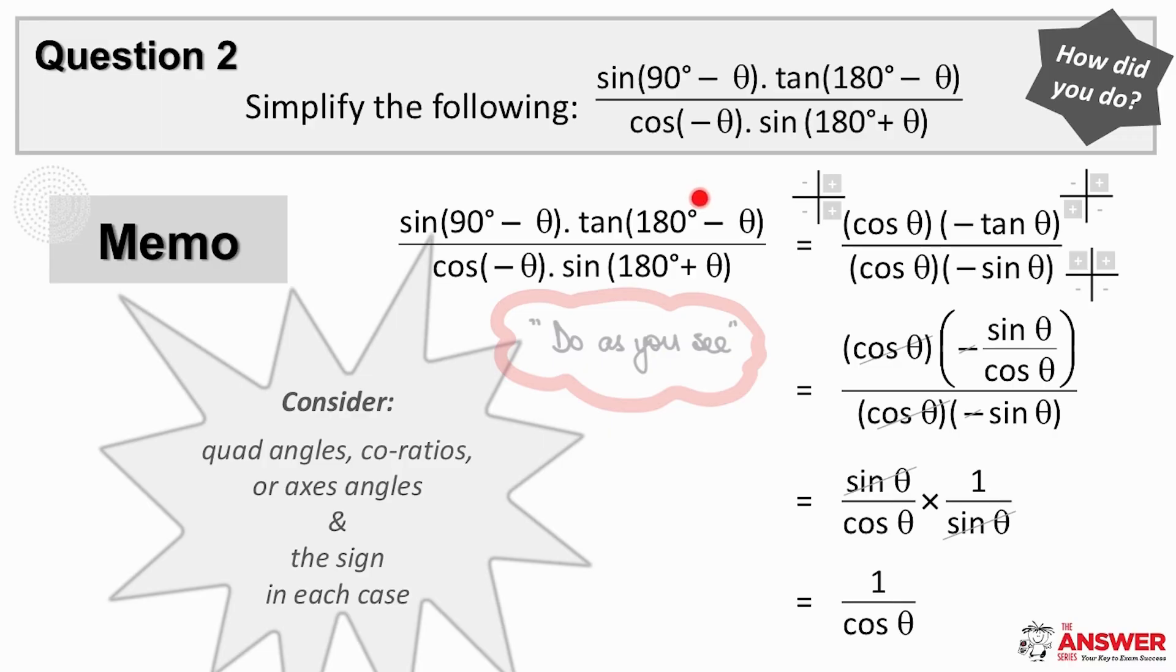Tan of 180 minus theta is tan in the second quad which reduces to negative tan theta using quad angles. Remember brackets.